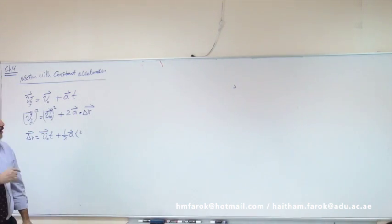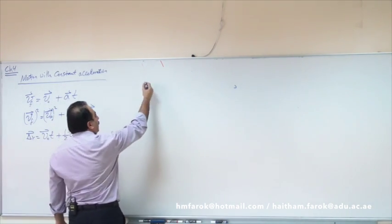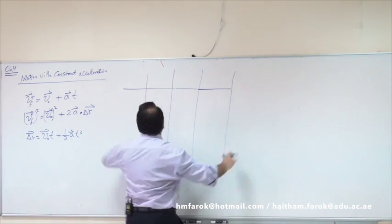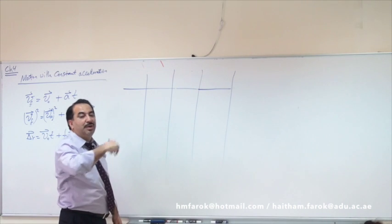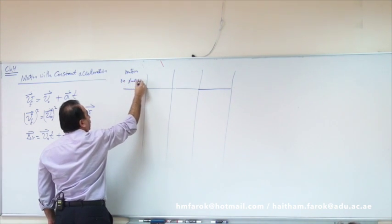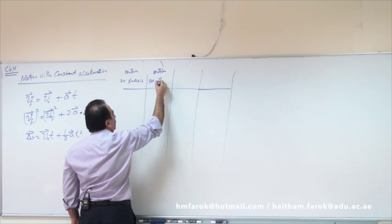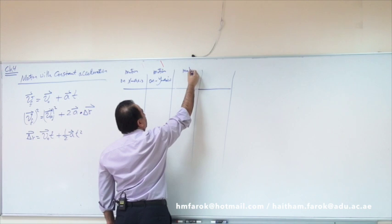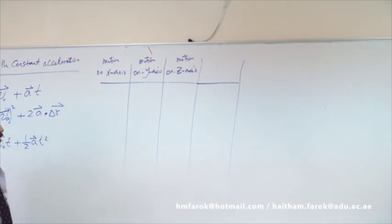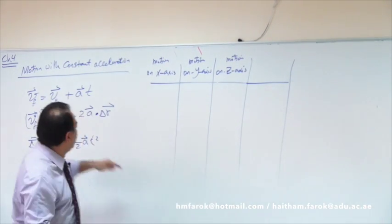Now, how do we use the equations of motion to solve problems of an object moving in space? Whenever you have a question about an object moving in space, always create a table with four columns: column one for motion on the x-axis only, column two for motion on the y-axis only, column three for motion on the z-axis only, and column four for x, y, and z together — motion in r.